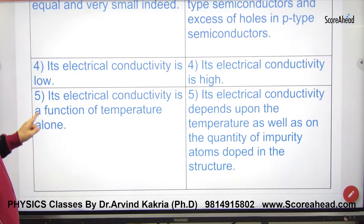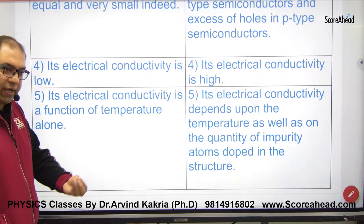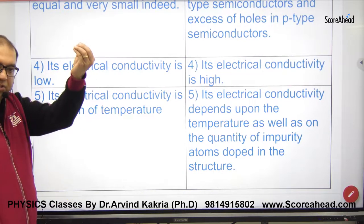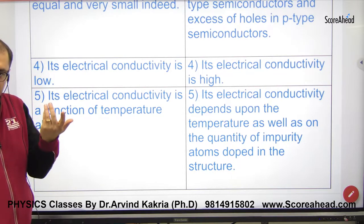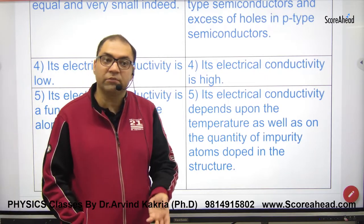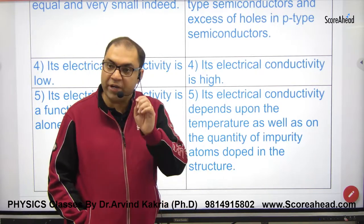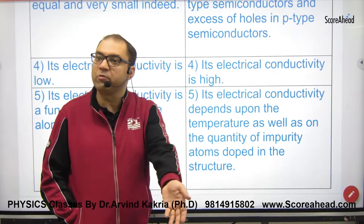Electrical conductivity is a function of temperature alone for intrinsic. As temperature increases, bonds break, electrons go to conduction band, holes are created. But in extrinsic semiconductors, conductivity depends on temperature as well as doping. Doping adds extra electrons or holes that contribute to electrical conductivity.